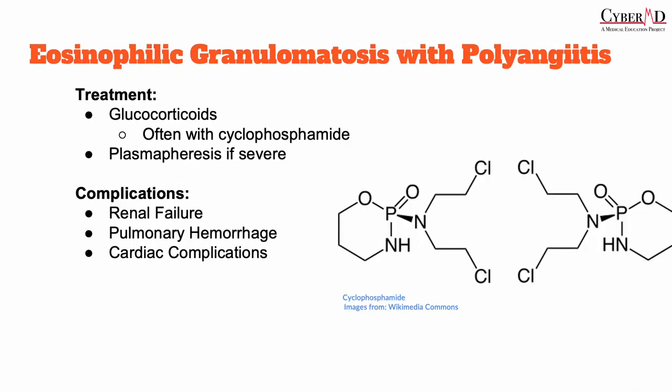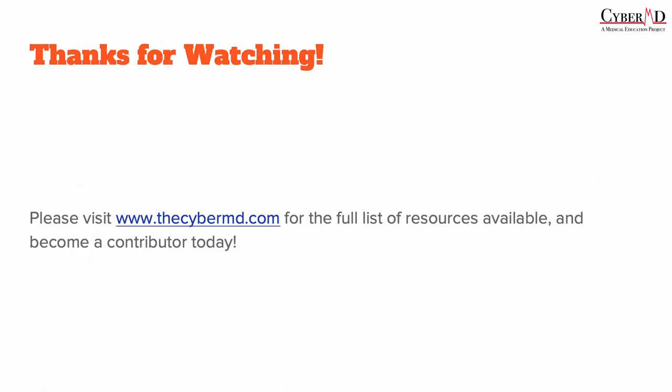With pharmacotherapy in these patients, we're trying to induce remission using immunosuppressive agents including glucocorticoids and cyclophosphamide. If end-organ damage is severe, plasmapheresis can be used in cases of rapid renal failure or bad pulmonary hemorrhage. Complications include renal failure, pulmonary hemorrhage, and cardiac involvement, all of which can be life-threatening. I hope this lecture helped. Please remember to like, comment, and subscribe so we can continue to provide free medical education resources to students around the world.